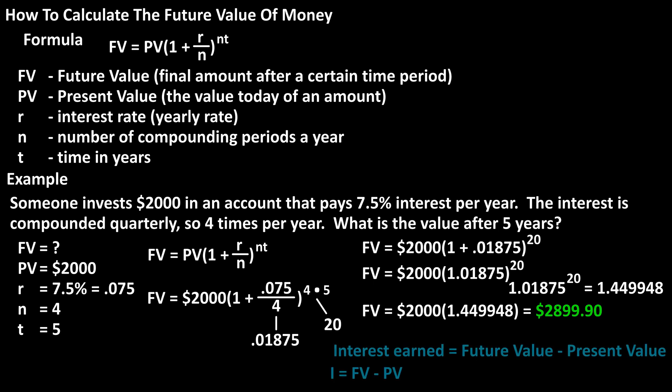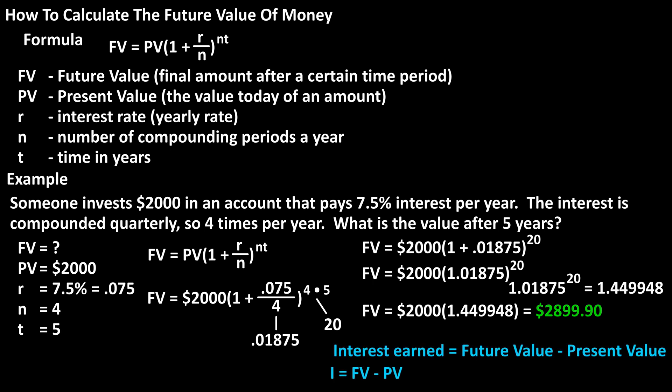The amount of interest earned will be the future value minus the present value: $2,899.90 minus $2,000, which equals $899.90.